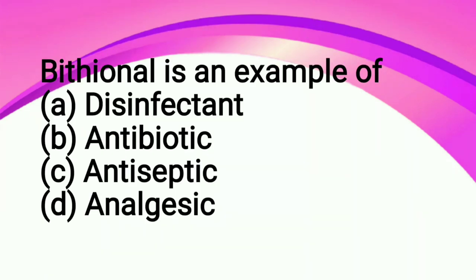Bethenol is an example of: option A disinfectant, option B antibiotic, option C antiseptic, option D analgesic. So the correct answer is option C antiseptic. Bethenol is a type of antiseptic which, if someone gets injured, is used for surface cleaning.